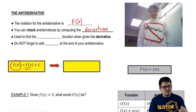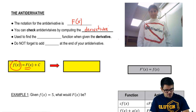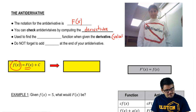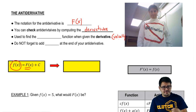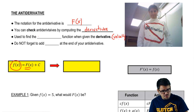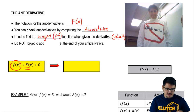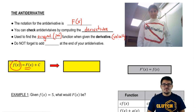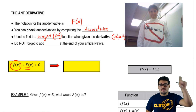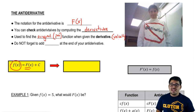Antiderivatives are used to find an original function when given the derivative. So if we're given velocity, the original function we want to find is the position formula. We can go from velocity to position, which means going from the derivative to the antiderivative.